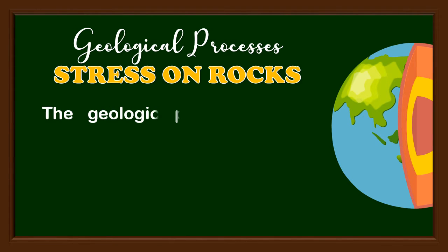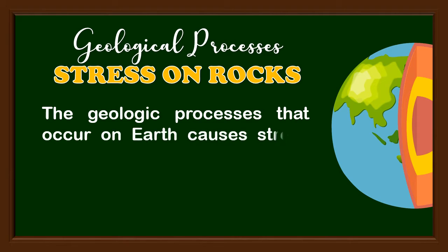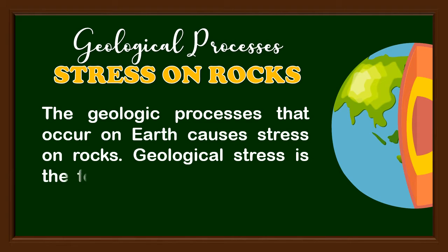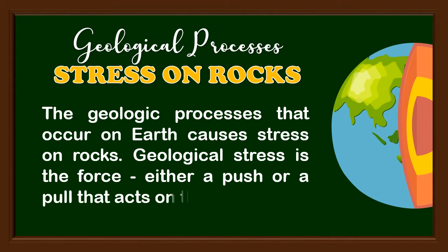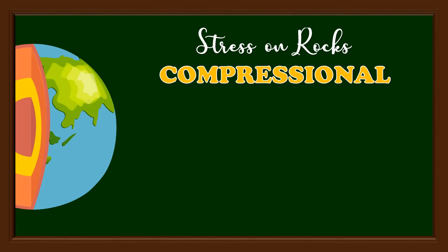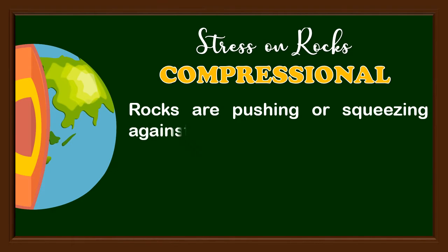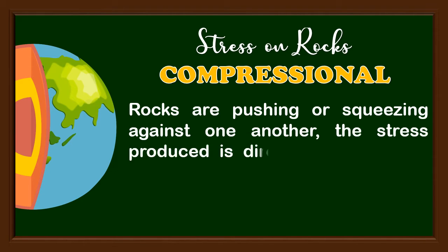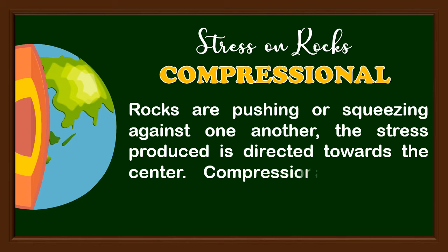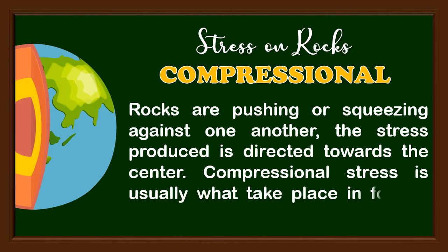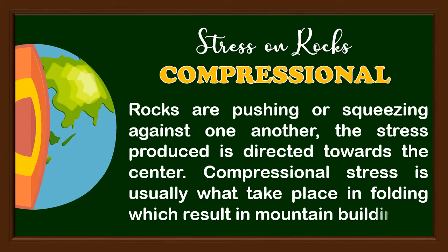The geologic processes that occur on Earth cause stress on rocks. Geological stress is the force — either a push or a pull — that acts on the rocks. There are four different types of stress. The first is known as compressional stress, where rocks are pushing or squeezing against one another, and the stress produced is directed towards the center. Compressional stress is usually what takes place in folding, which results in mountain building.